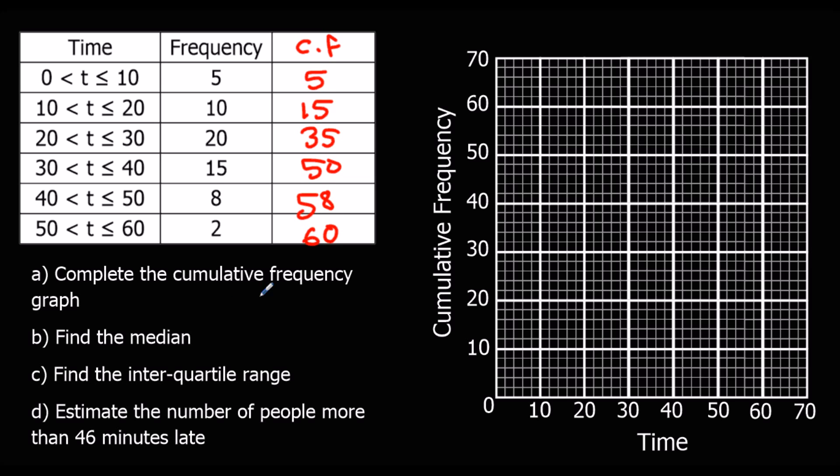Complete the graph. Plot the top points. Top points against cumulative frequency. So 10 against 5. 20 against 15. 30 against 35. 40 against 50. 50 against 58. And 60, 60. Smooth curve to join them up. Try and not miss the points like me.